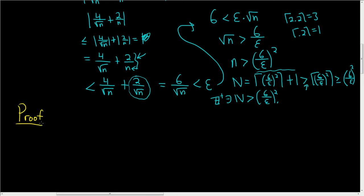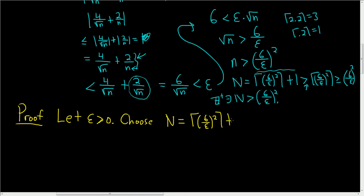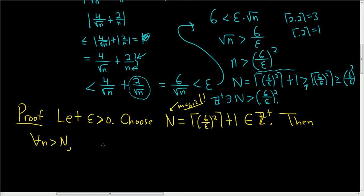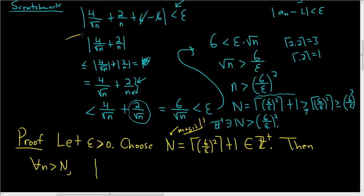Proof. We start the proof by letting epsilon be greater than 0. Then we have to find N — we just spent a while doing that. So choose capital N equal to the ceiling function of (6/epsilon) squared plus 1. That's certainly an integer. If I hadn't done any of the scratch work, this would seem like magic — it wouldn't make any sense at all. Then for all little n bigger than capital N, we look at our sequence: 4 over the square root of n plus 2 over n plus 6. That's our a sub n. We want to show that when you subtract L, this is going to be less than epsilon.